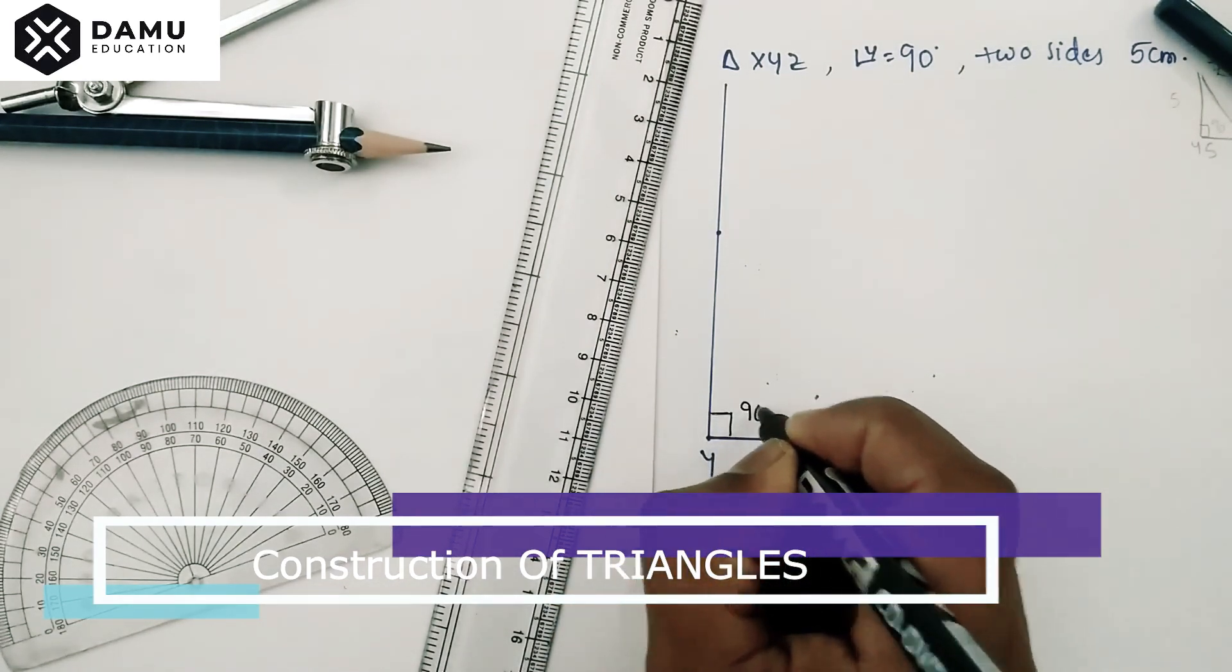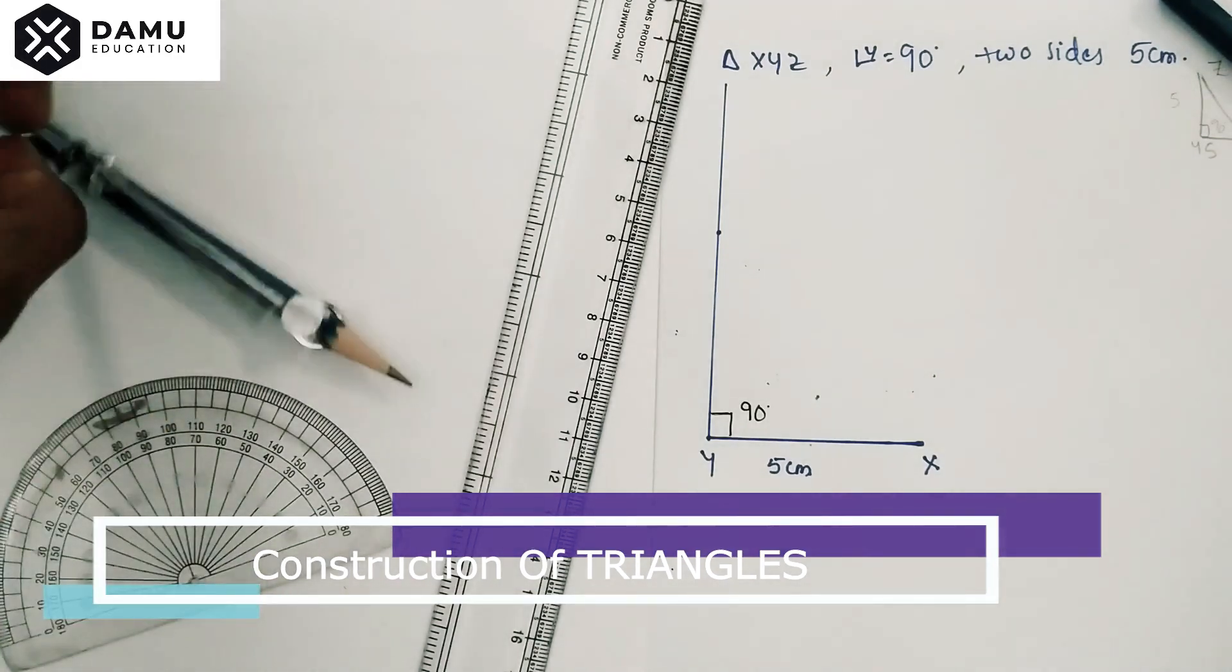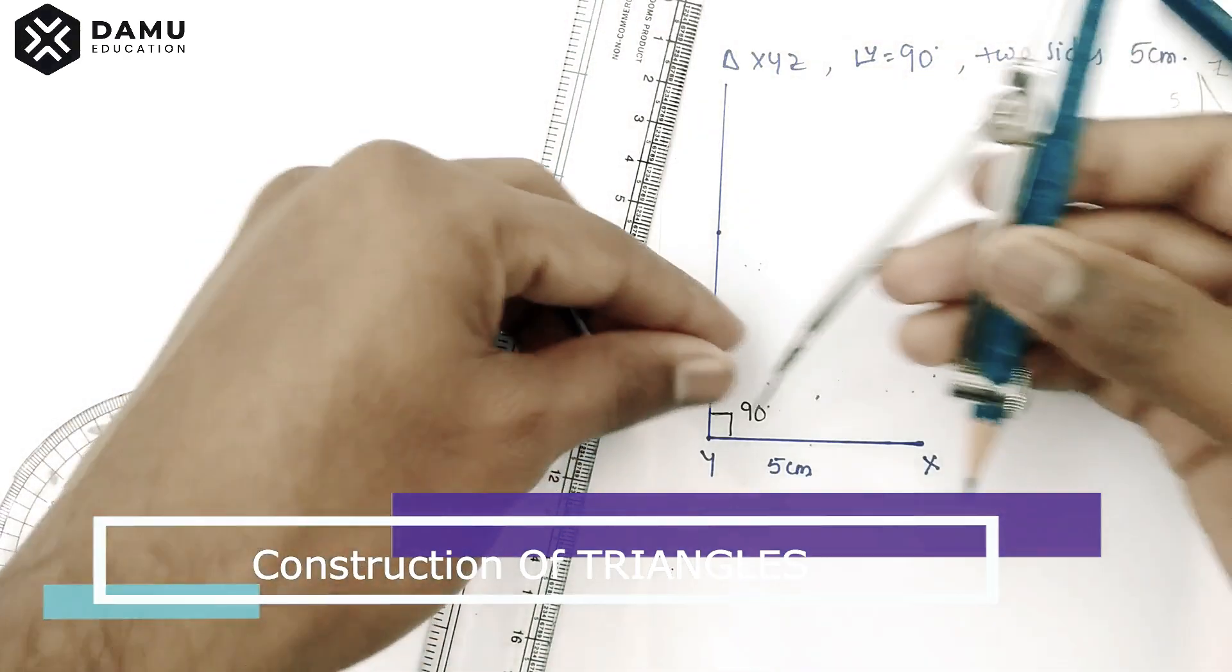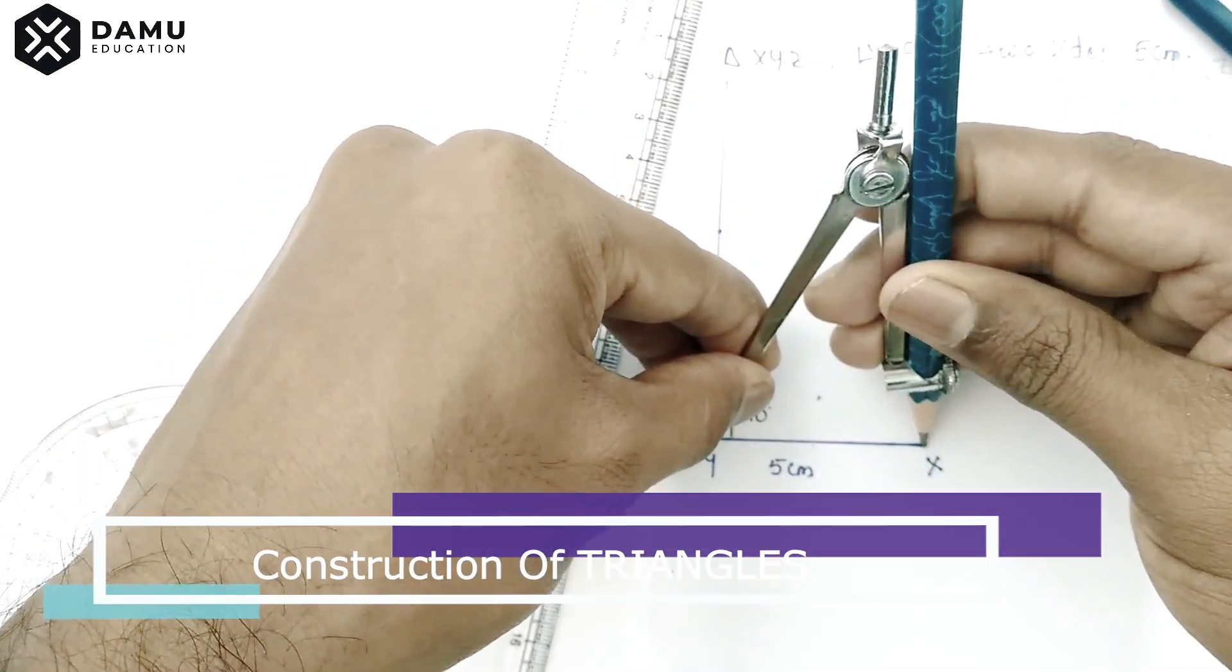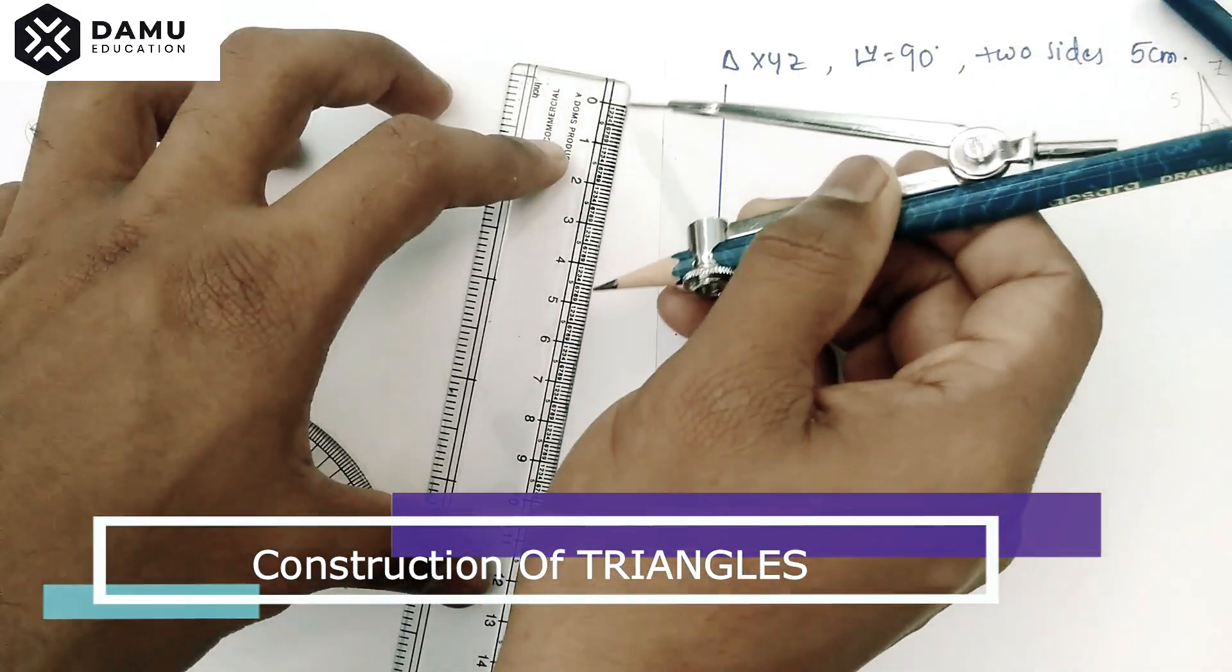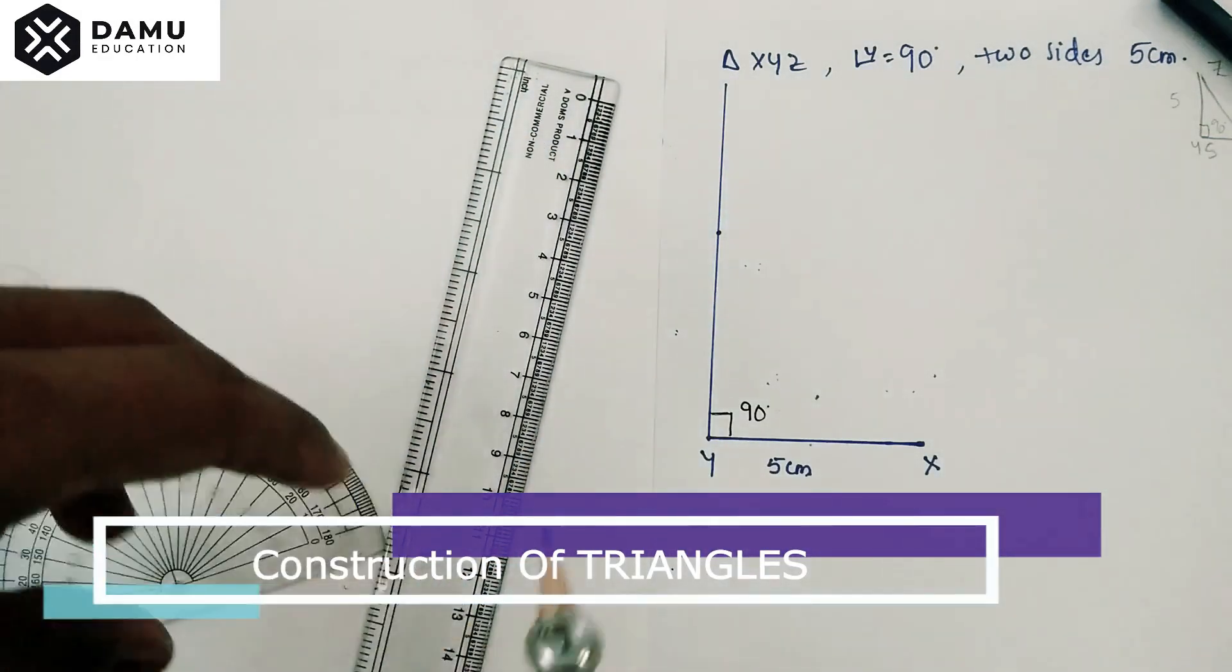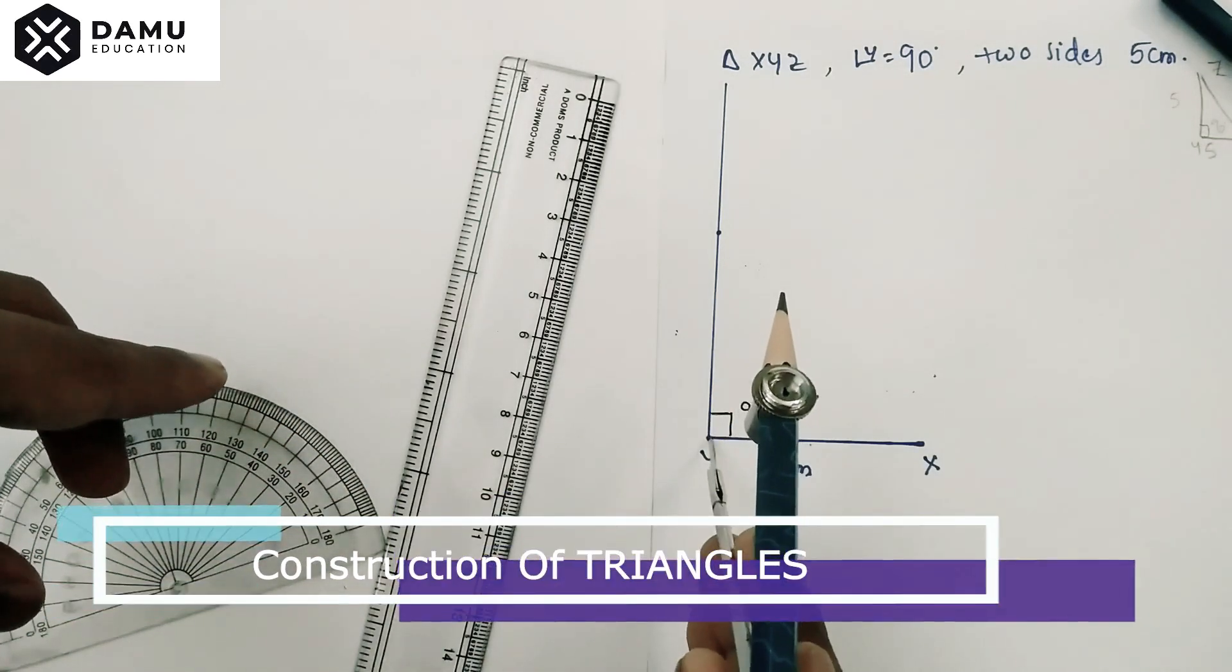What we need to do is measure 5 centimeters and draw. Check if 5 centimeters is there or not. Yes, it is there. So draw an arc with center Y.